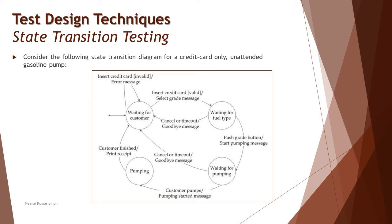Taking another real-time example: consider a state transition diagram for a credit-card-only unattended gasoline pump. Assume this is a given requirement you have been asked to test. Converting this theoretical scenario into a pictorial state transition diagram — the very first state is 'waiting for customer'. The first scenario: while waiting, a person inserts an invalid credit card.